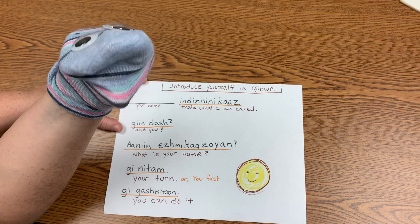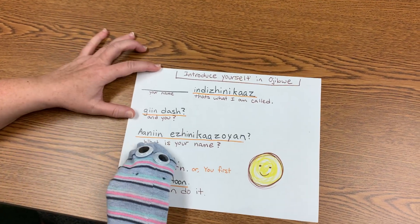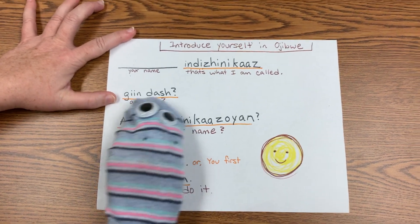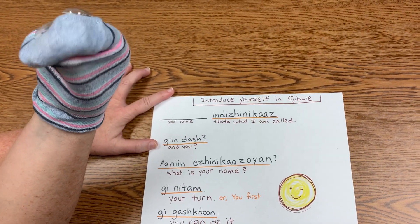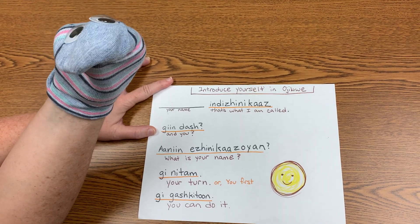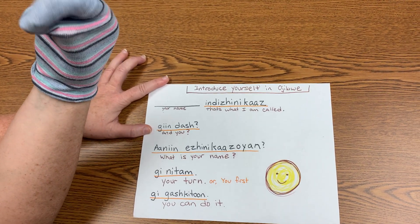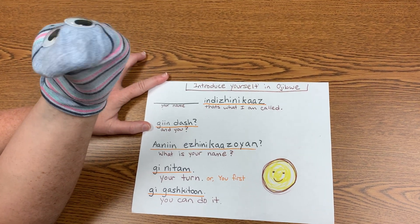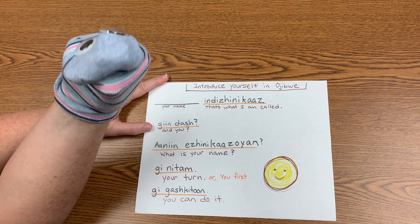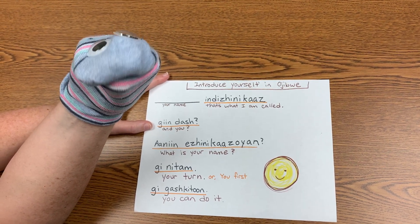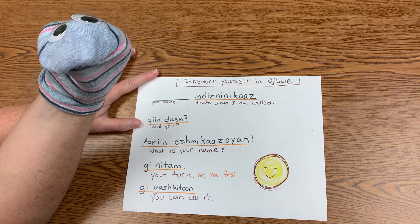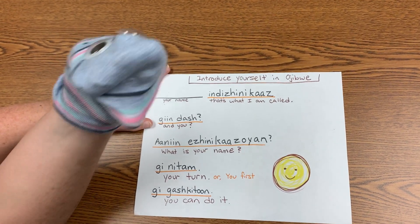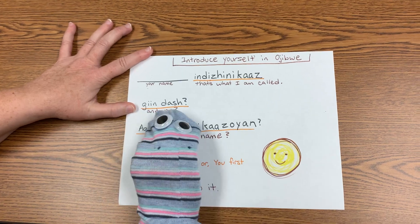Next, you can say gindash. Look here — gindash. Two I's together is always the sound of E. So our first word, g-i-i-n, is pronounced 'gin.' The second word is 'dash.' In Ojibwe, the A always sounds like a U. So d-a-s-h in Ojibwe is 'dash.' So let's try it again: gin-dash.